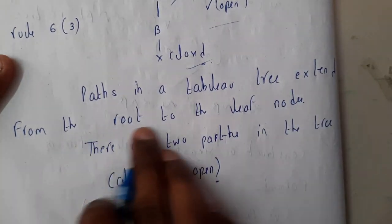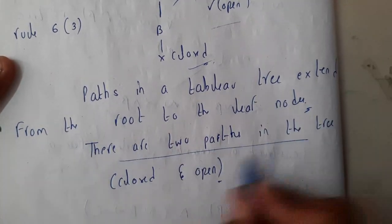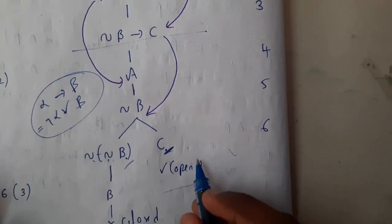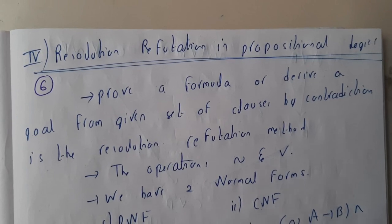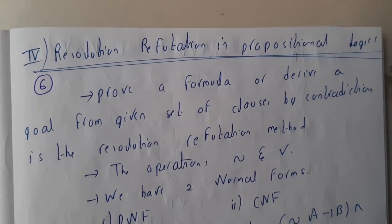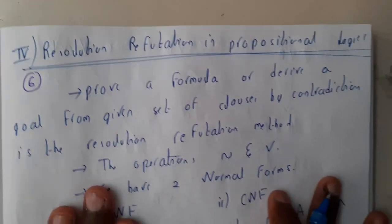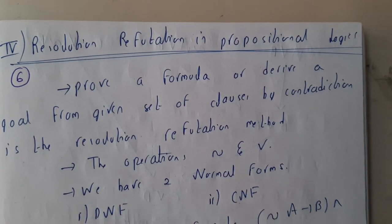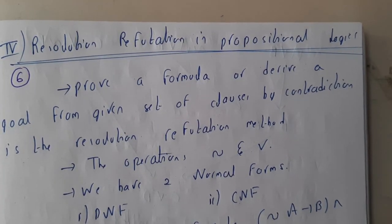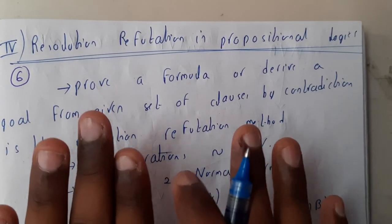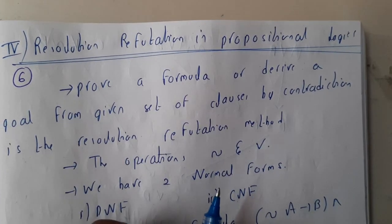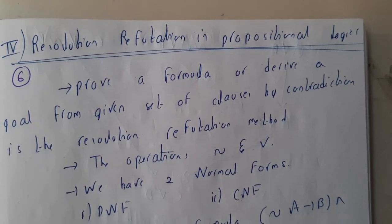So this is the path. A path in tableaux tree extends from the root to the leaves. There are two paths: closed and open. I hope everyone got a clear idea. In the next lecture we will be going to resolution refutation in propositional logic. This topic is again covered in first order predicate logic, so please watch this lecture because there is a 10 marks question completely based on this concept. Let us meet in the next tutorial, thank you.